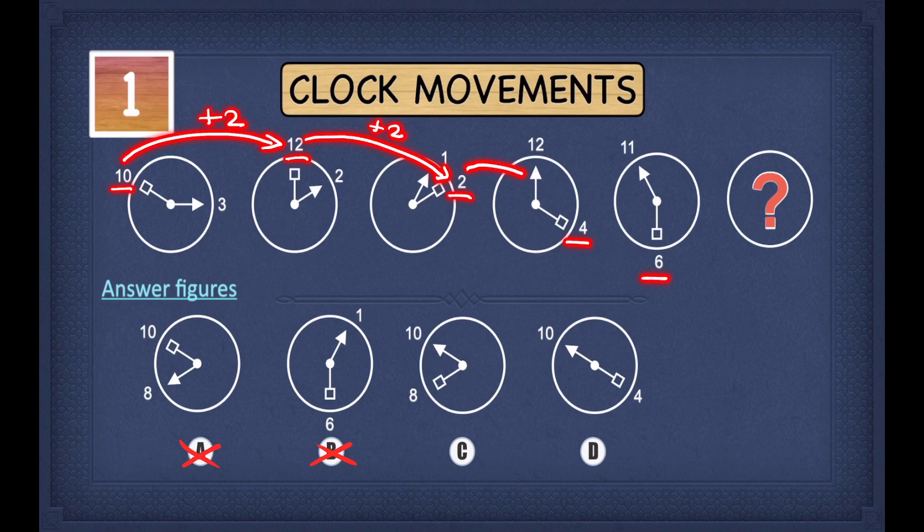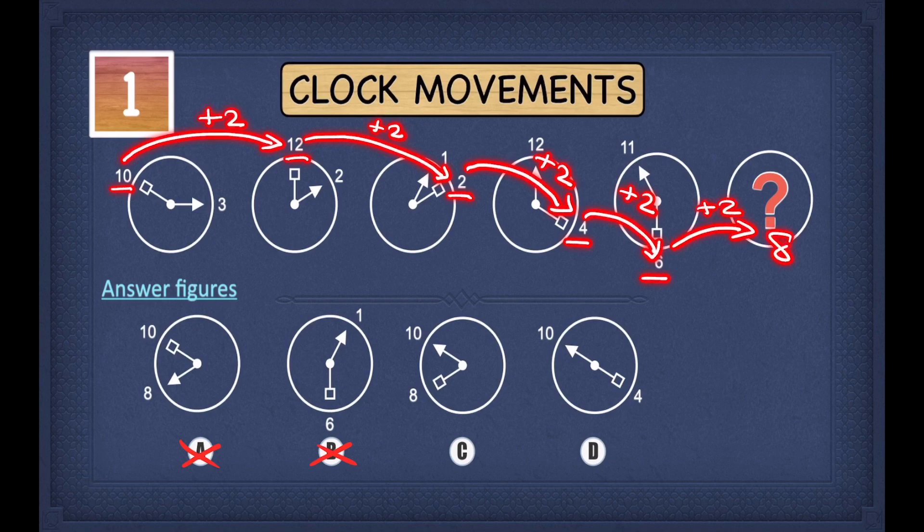And to get from two to four, you're going to add two. To get from four to six, you have to add two once again. So this means, to find out where the square is pointing in our answer, we have to add two to the six. And six plus two will give us eight.